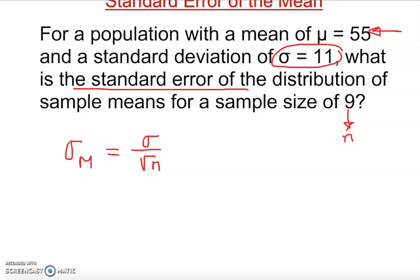If we look at this, most probably everything is given here. The population standard deviation is given, sample size is given. All we do is plug it in. Standard deviation is 11 over square root of n, which in this case is 9.